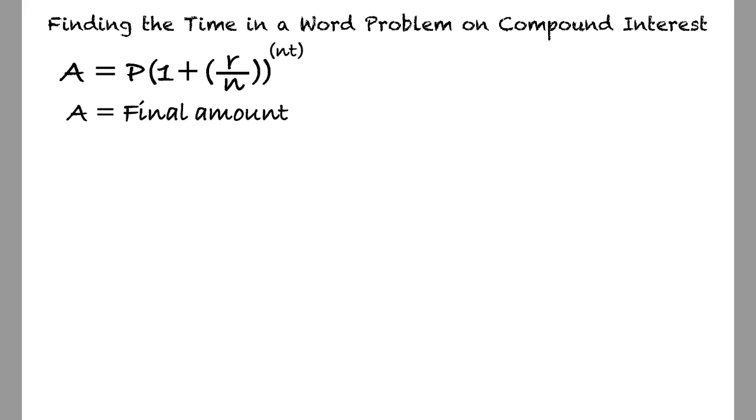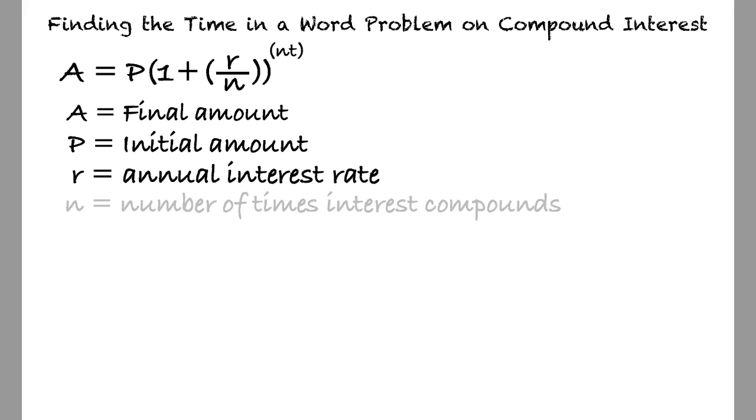A represents the final amount. P represents the initial amount. r represents the annual interest rate, and n represents the number of times that interest is compounded per year.